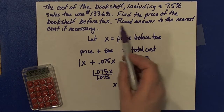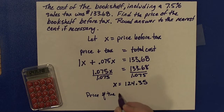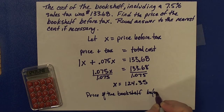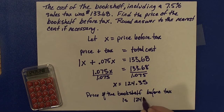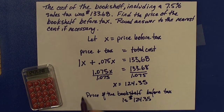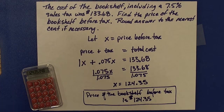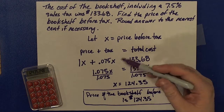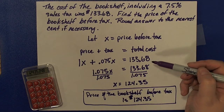So for my answer — the price of the bookshelf before tax is $124.35, and my units are dollars. If I wanted to check that answer, I could take that price, find the tax on it, add them together, and make sure I get $133.68.